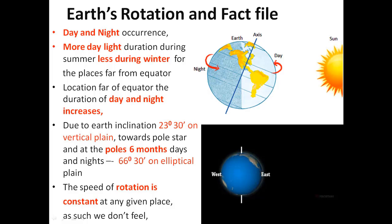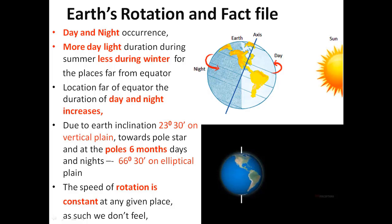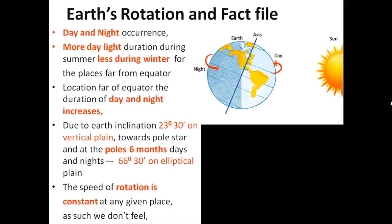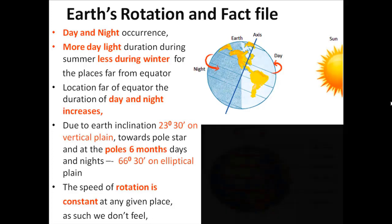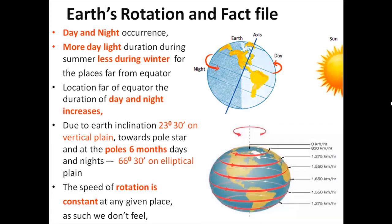There are some more facts about the speed of rotation. The speed of rotation of the Earth on its own axis is constant at any given place and we don't feel it — it is an apparent situation. But there is a different perspective: at the equator, the distance covered in one hour is 1650 km.